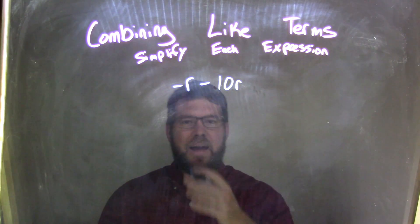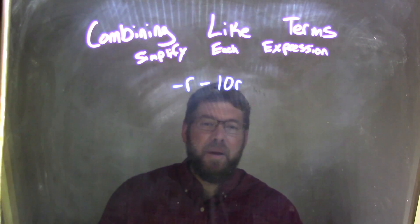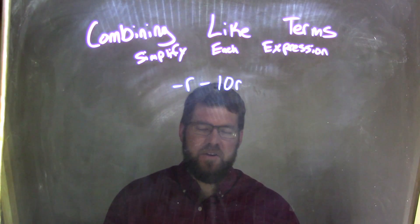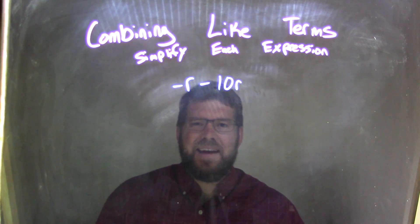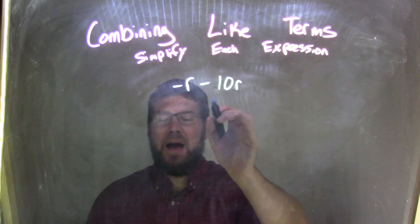Well, if I want to combine these, I see that negative r minus 10r, and you might be able to see that and say, okay, it's going to be negative 11r, and that's great. The way I like to see it, when I see that subtraction, is I convert that to adding a negative.